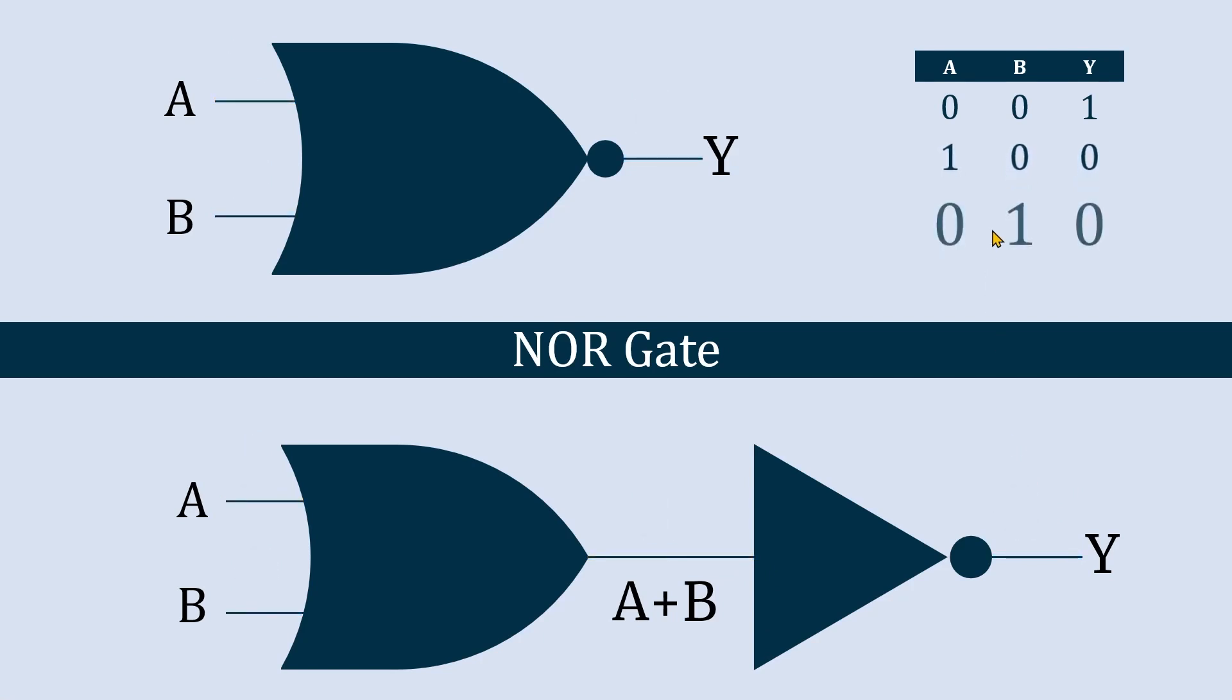The same thing will happen when A is 0 and B is 1. So here we'll have 0 in output, but what happens when both the inputs to this NOR gate is 1? In this case also the output would be 0.